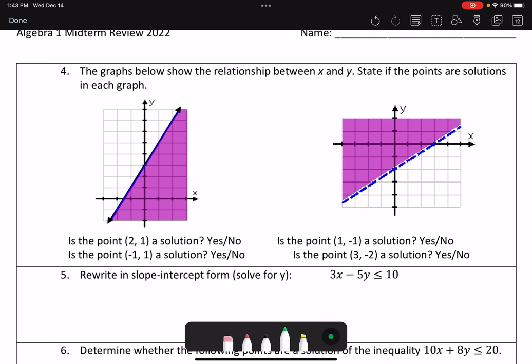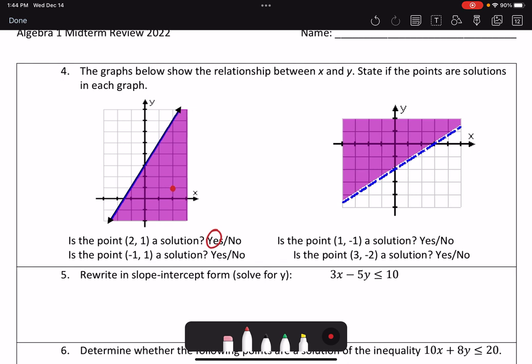For number 4, I'm going to look at the graphs below, and they show a relationship between x and y. We're going to state if the following points are solutions in the graph. So this first one says look at the point (2, 1). So I'm going to go right 2 and up 1. Is it a solution? Absolutely. Then I'm going to look at the point (-1, 1). So that falls on a solid line, so it is a solution.